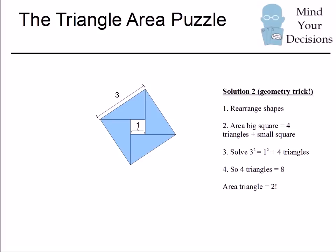From this, we can figure out the answer. We know that the area of the big square is equal to the area of the four triangles plus the area of the small square. We can solve the area of the big square, 3 squared, must be equal to 1 squared plus the area of the four triangles. That means the area of the four triangles must equal 8, and the area of a single triangle is 2.